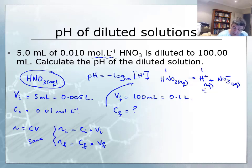These two values are the same, which means Cᵢ × Vᵢ = Cf × Vf. Since I don't know the final concentration, I divide both sides by Vf to find Cf = (Cᵢ × Vᵢ) / Vf.